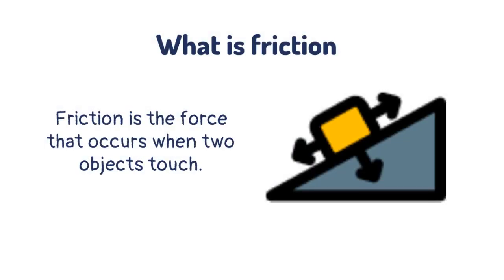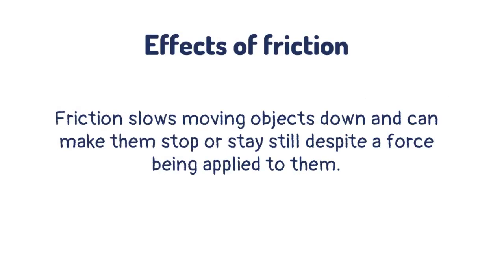Friction is the force that occurs when two objects touch. Friction slows moving objects down and can make them stop or stay still despite a force being applied to them.